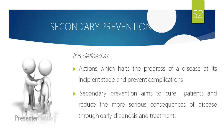Secondary and tertiary prevention apply once the disease has already occurred. Secondary prevention halts the progress of a disease at a very early stage and prevents complications. For example, dental caries that has already occurred is restored to restore masticatory function — that is secondary prevention. For primary prevention of dental caries, we use fluoride therapy or pit and fissure sealants to prevent caries from occurring.